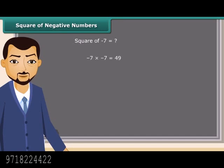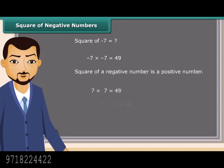Negative numbers can also be squared. When we square a negative number, we get a positive number. Suppose we have both the same positive and negative number — if we square both of them, the result will be the same. That was a really interesting thing to know.